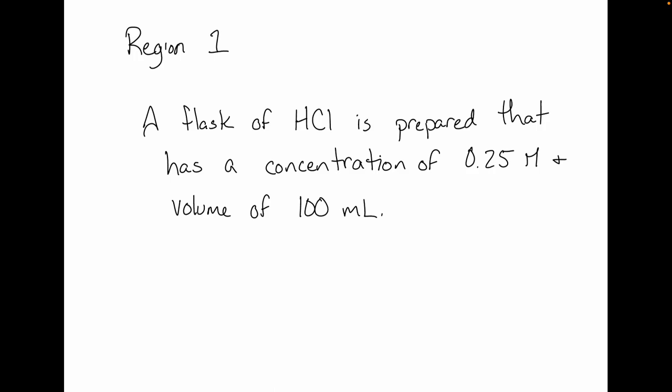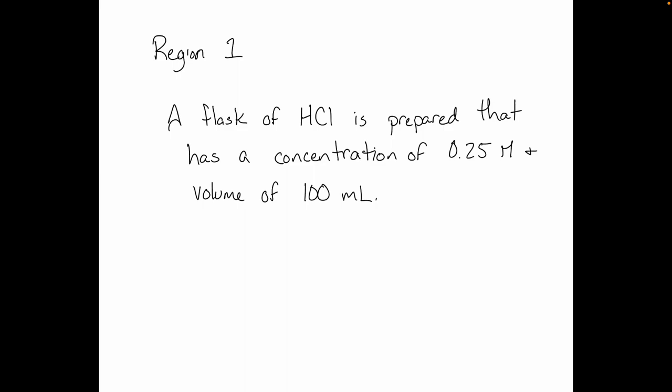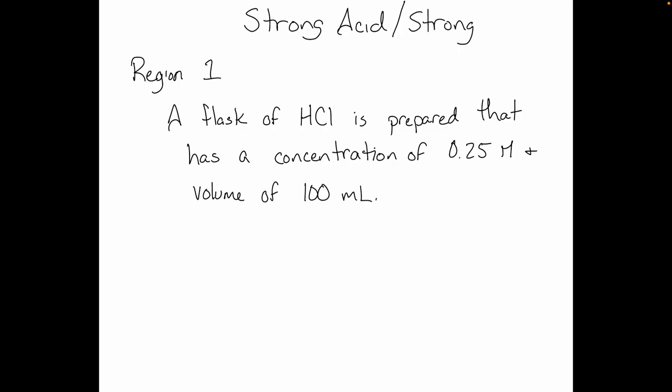So here's your initial solution. The first thing we do is prepare this flask of acid. In this case, we're going to prepare a flask of hydrochloric acid at a concentration of 0.25 molar with a volume of 100 milliliters. Since we're starting out with HCl — what is HCl? Strong. So this would be an example of a strong acid, strong base titration. That first point, that initial concentration — we should be able to calculate the pH of a solution of a strong acid. Everybody take a second and see if you can remember how we would solve this.